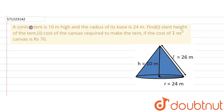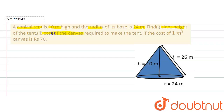The given question says that a conical tent is 10 meters high. We are given the height of the conical tent, and the radius of its base is 24 meters. We are required to find the slant height of the tent, and then the cost of the canvas required to make the tent, if the cost of 1 square meter of canvas is Rs. 70.